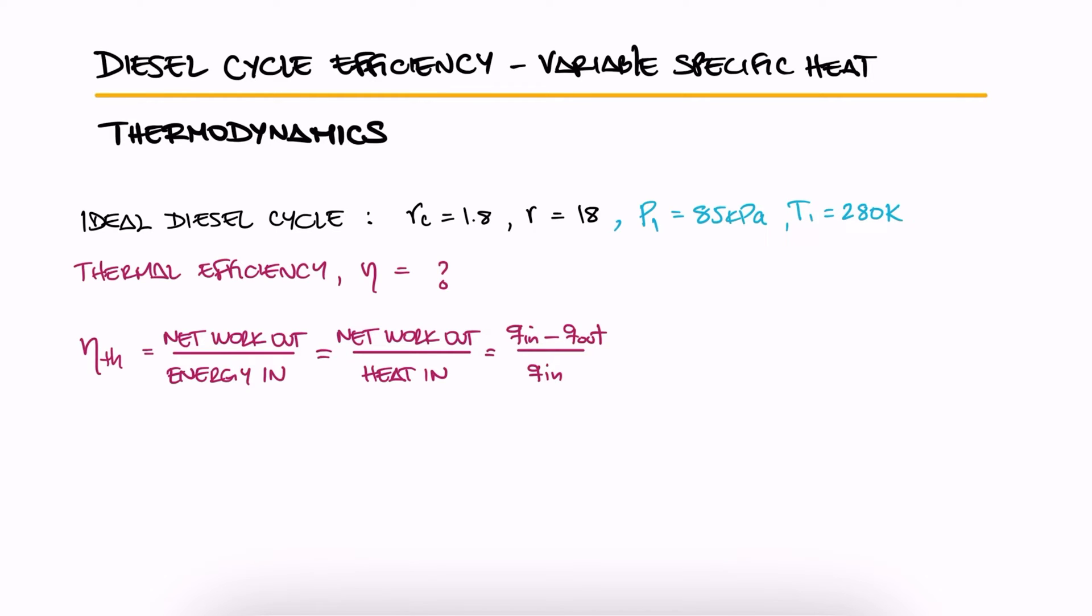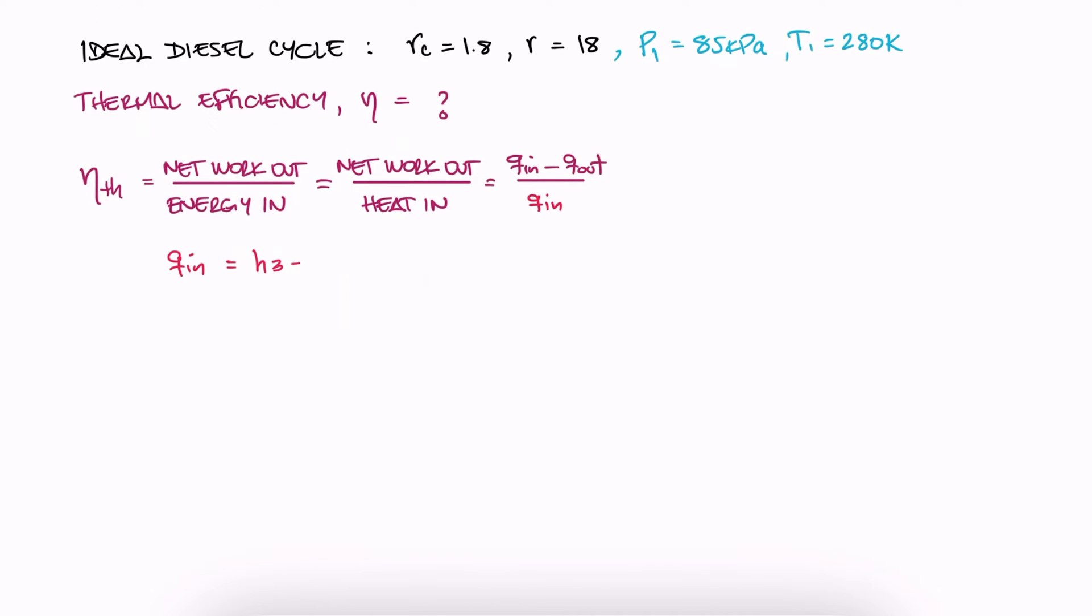This means we need to calculate the heat in, which we learned in the main lecture is the enthalpy change between 3 and 2, and we need to calculate the heat out, which is still isochoric heat removal, or the internal energy change between 4 and 1. This is assuming state 1 as the state before the compression stage.